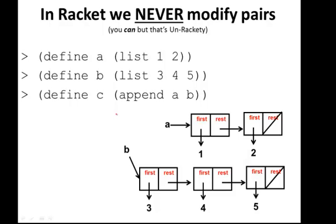In Racket, we never modify pairs. You can modify pairs, but we don't modify pairs. So here I have list A and list B. Again, those are calling cons, because cons is what makes those pairs.